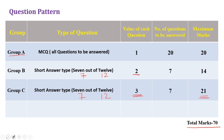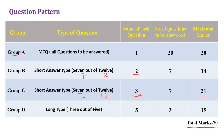Group D is long type questions — 3 out of 5. There are 5 questions and you answer 3. One question carries 5 marks in Group D. Maximum marks is 15.